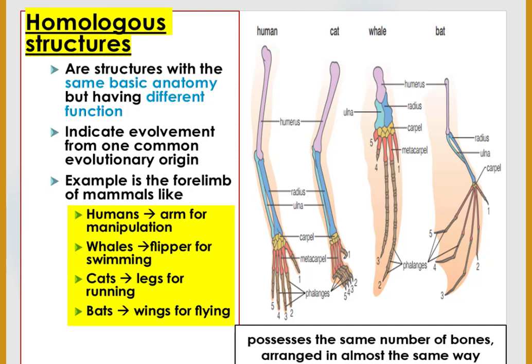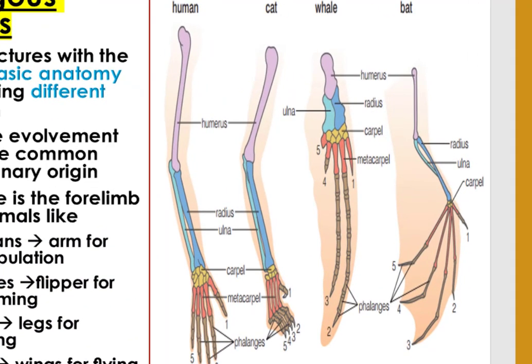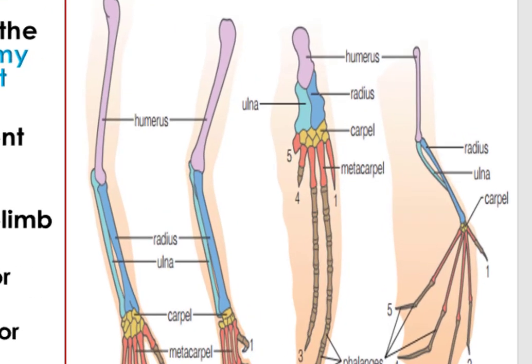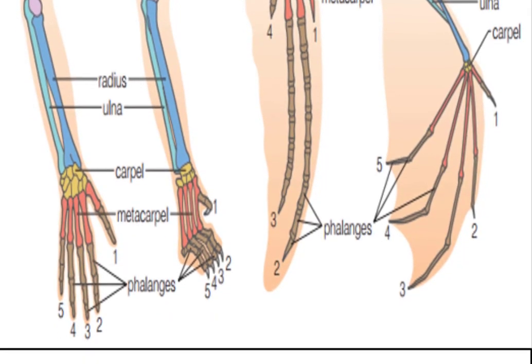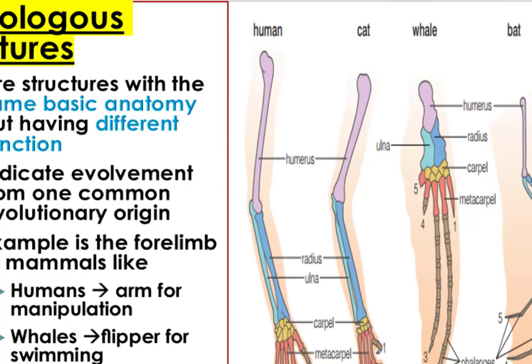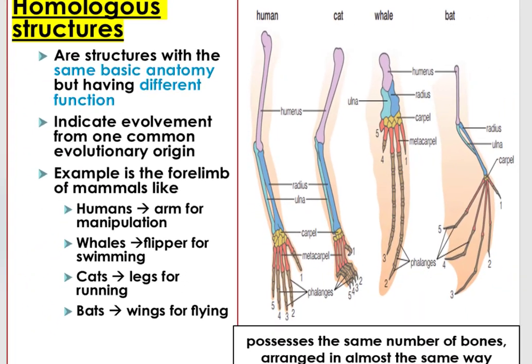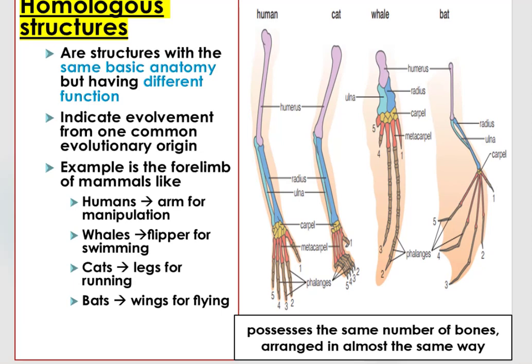There are two major concepts of comparative anatomy: homologous structures and analogous structures. Homologous structures are body parts which are similar in different species because those species share a common ancestor and have evolved divergently from that shared ancestor. These homologous structures may or may not perform the same function. The best example is the four limbs of mammals — human, whales, cats, and bats — which possess the same number of bones arranged in almost the same way, indicating evolution from one common ancestor.